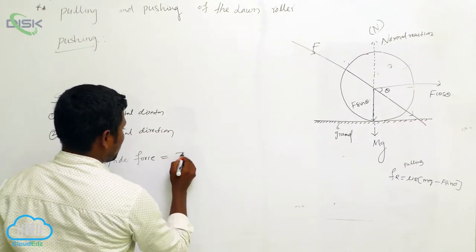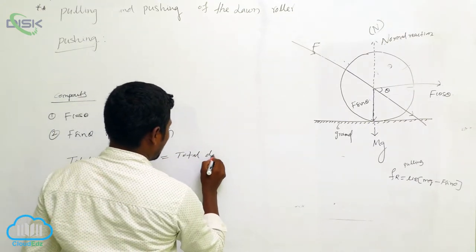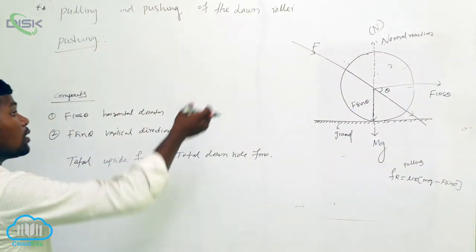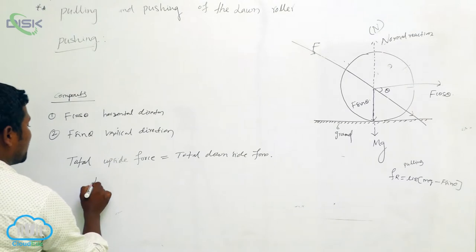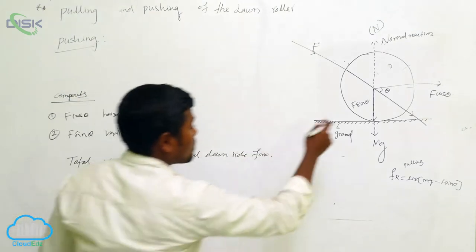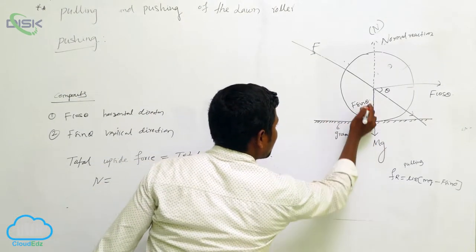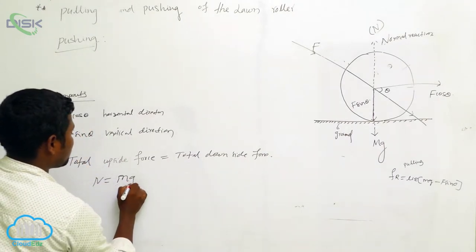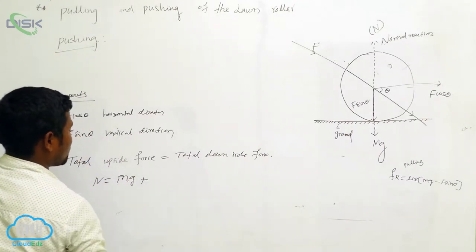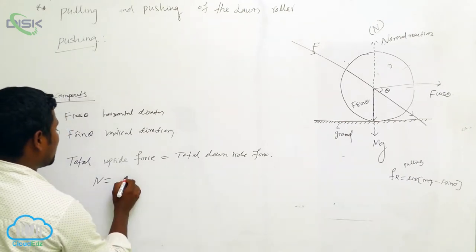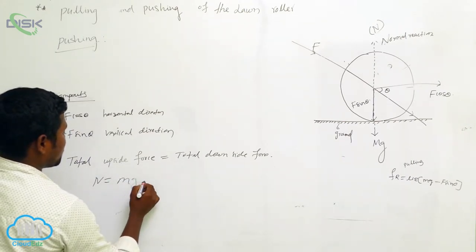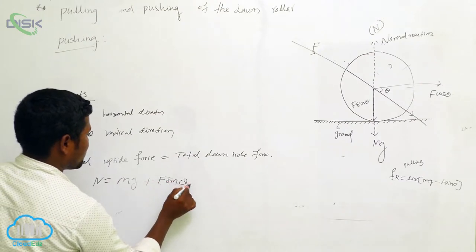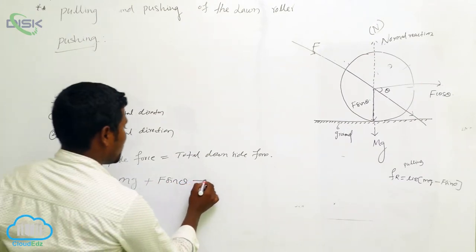Total upside force is N. The downside forces are: mg is there and f sin θ is there. So we can write N = mg + f sin θ. This is equation number one.